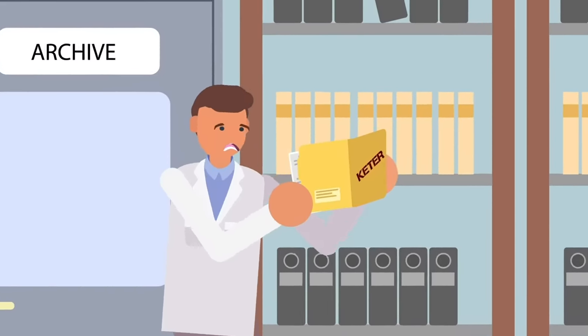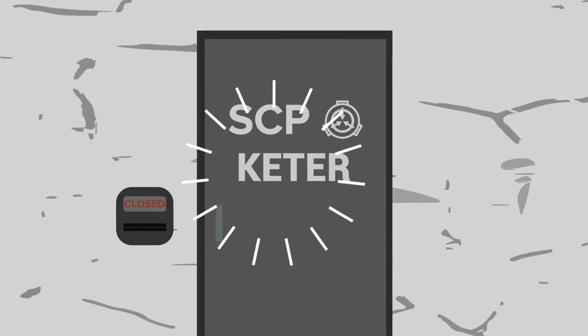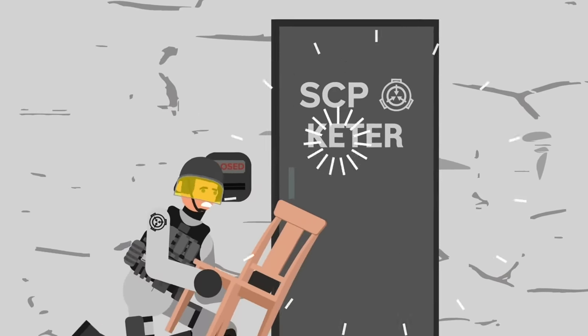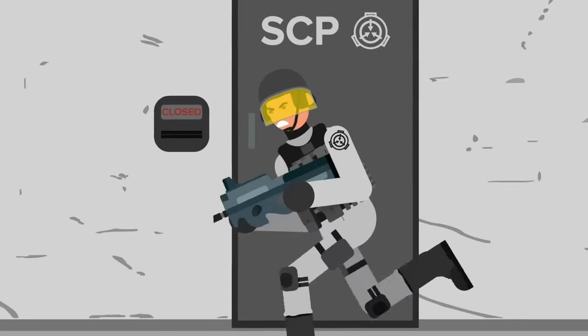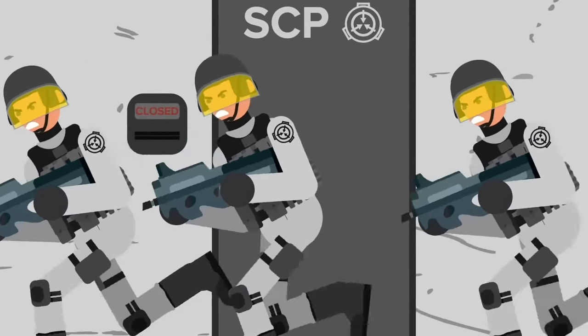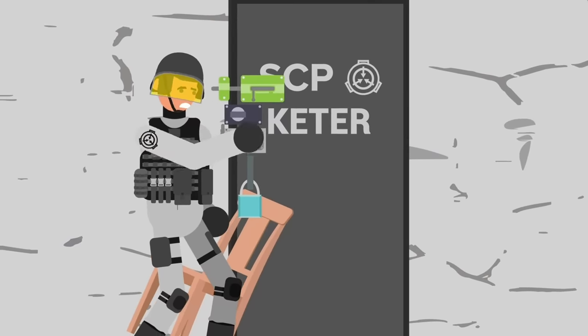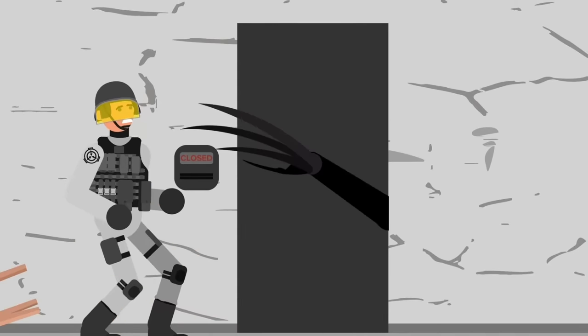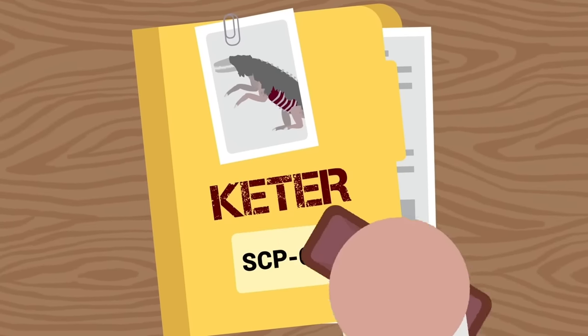In the simplest terms, you could describe Keter-class anomalies as Euclid, but worse. Again, this has nothing to do with how violent or dangerous the anomaly is, merely how difficult it is to contain. Keter-class anomalies often require extensive resources to fully contain. Containment methods are also often extra thorough and complex, though when it comes to a Keter-class anomaly, there's no guarantee the methods will be one hundred percent effective.